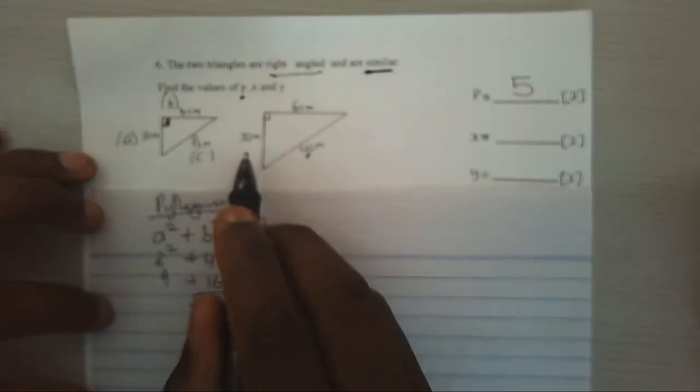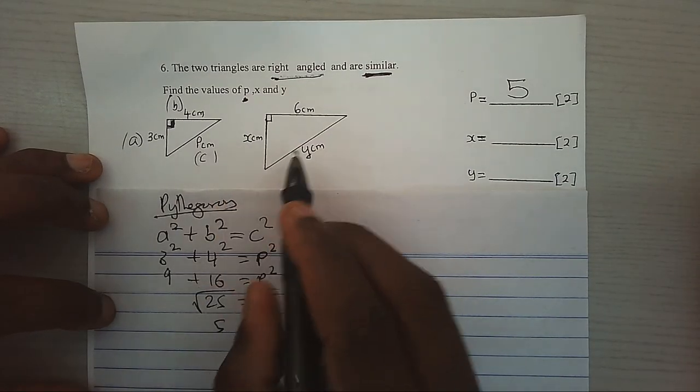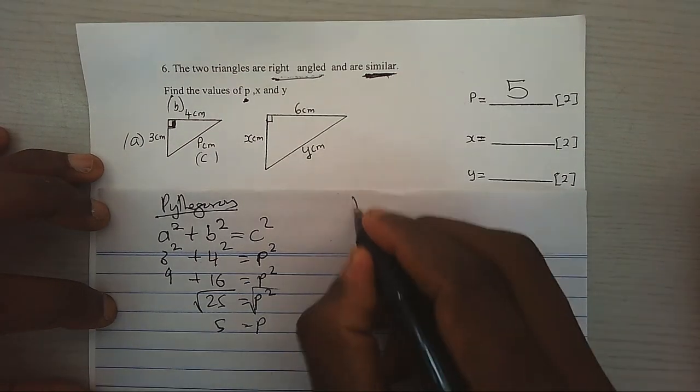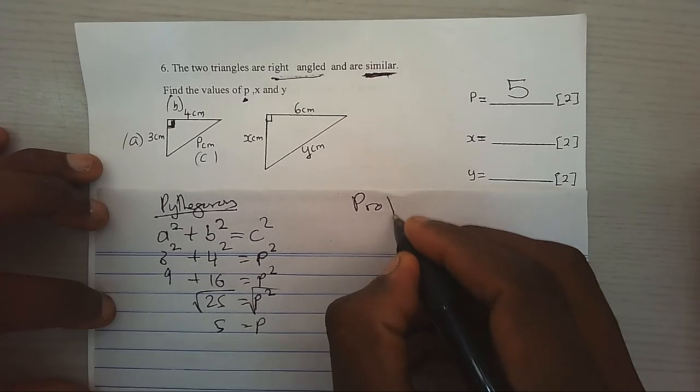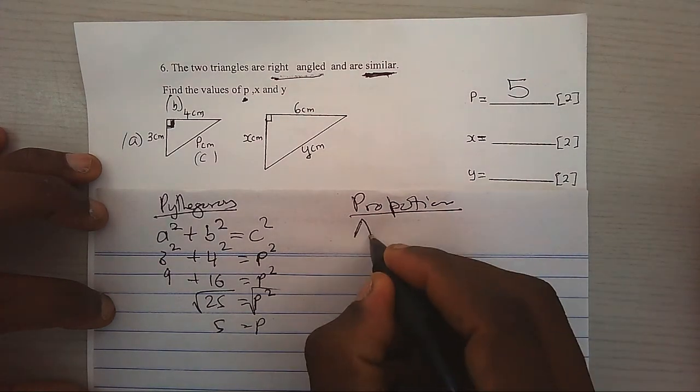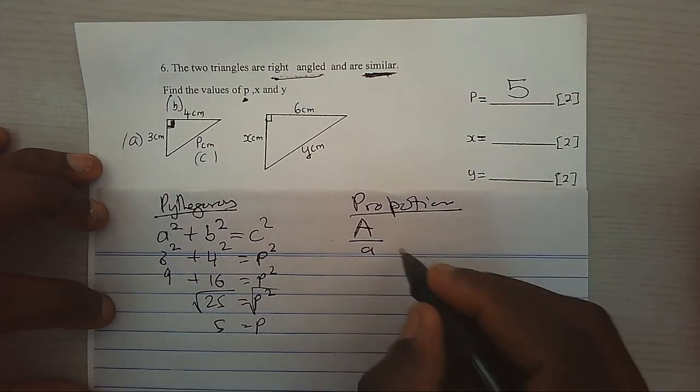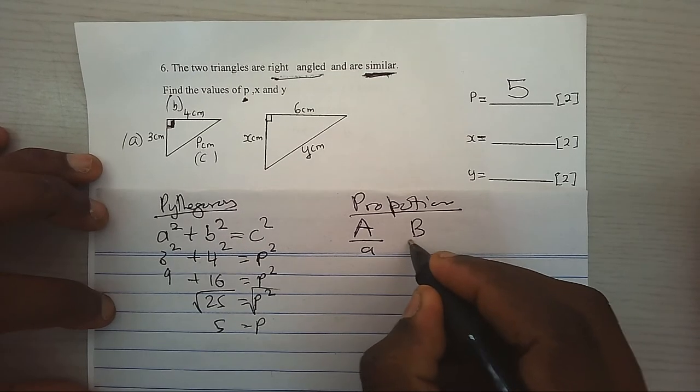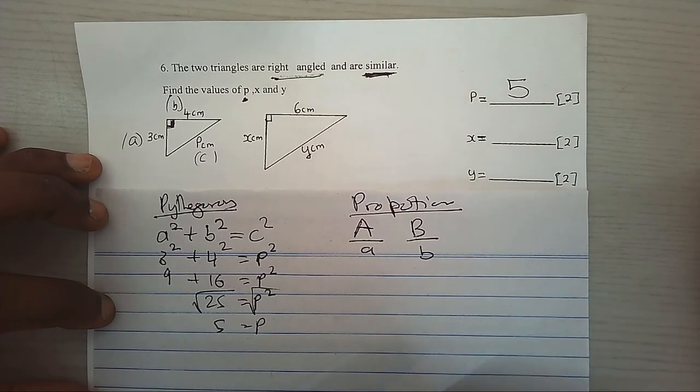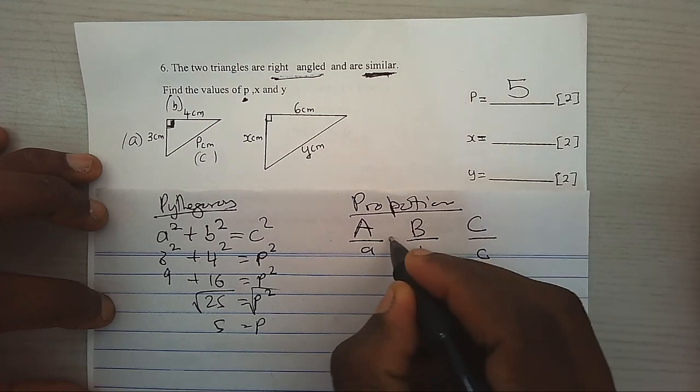In order for us to be able to find X and Y, we shall use similarity. That is, proportion. Side A will always be proportioned to the side A of a smaller shape. Side B of the bigger shape will always be proportioned to side B. And C is proportioned to side C. Now, these proportion sides, they will always be equal.